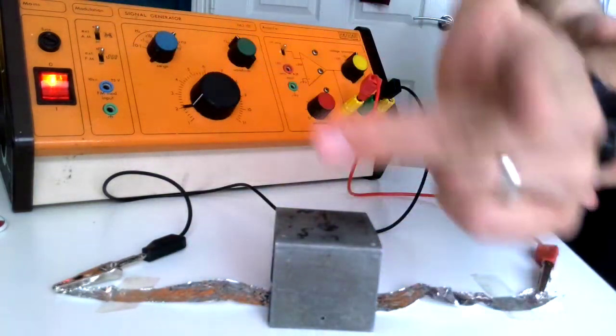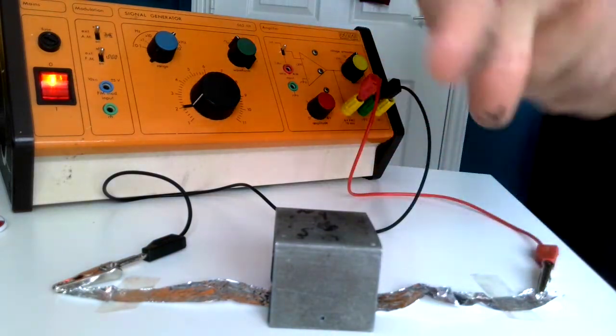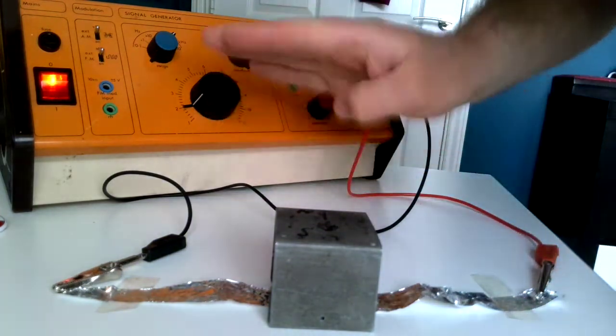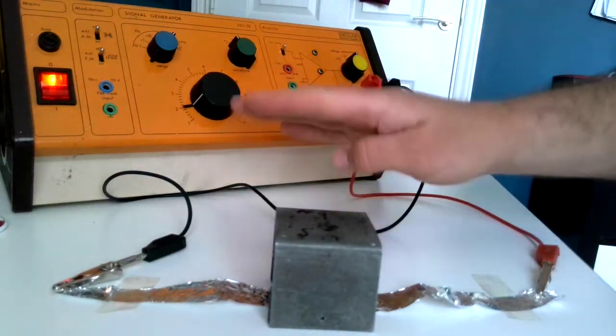the current is flowing this way, forcing it up, and then it's flowing this way, forcing it down. So 2000 times per second, that foil is oscillating up and down.